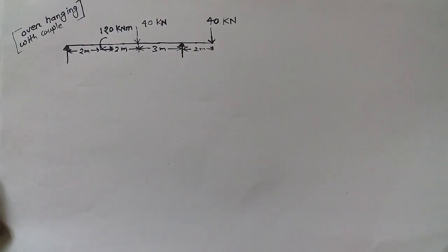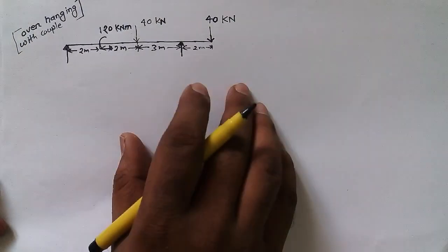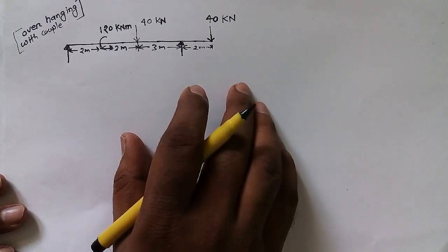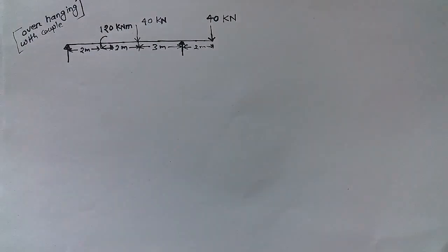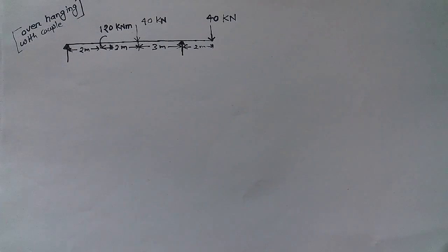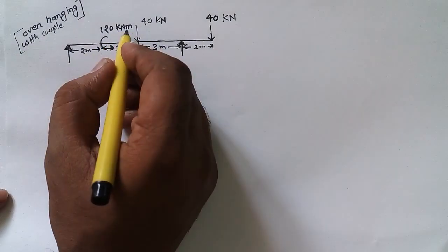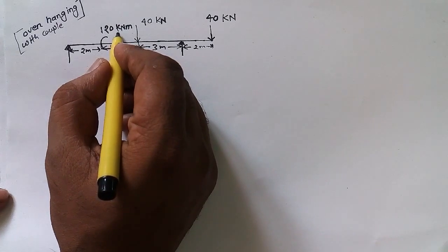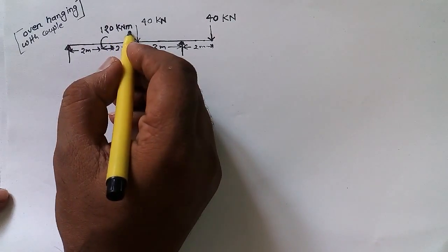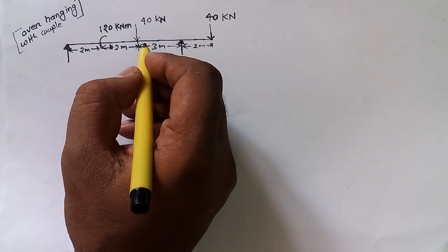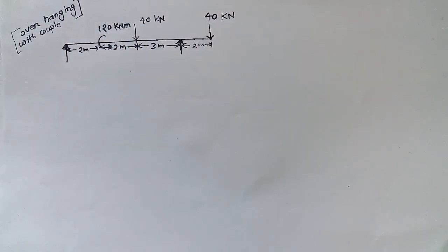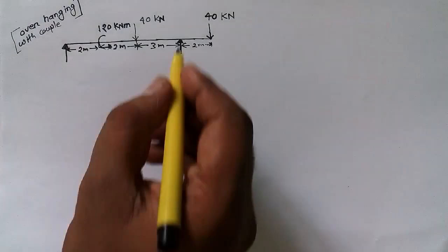Hello, this is Joel and today I'm going to share with you how to draw a shear force diagram (SFD) and bending moment diagram (BMD) when we have a point load and a couple. A couple's unit is in kilonewton-meter and this is a point load.